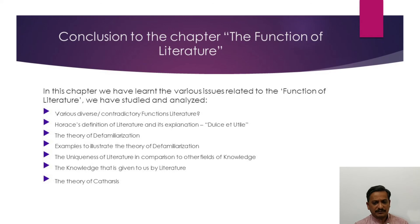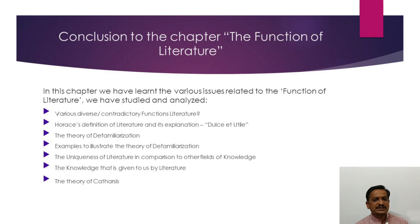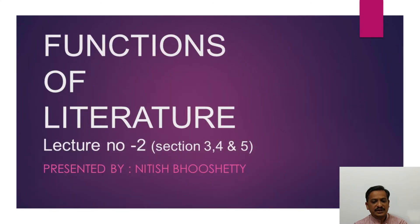With this, we come to the conclusion of this chapter, Function of Literature. In this chapter, we have learnt the various issues related to functions of literature: the diverse and contradictory functions or uses of literature; Horace's definition of literature and his dictum Dulce et Utile; the theory of defamiliarization and examples to illustrate it; the uniqueness of literature in comparison to other fields of knowledge; the knowledge that literature gives us; and finally, the theory of catharsis. With this, we come to the end of this lesson, the Function of Literature. Thank you.